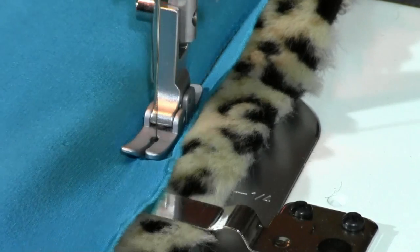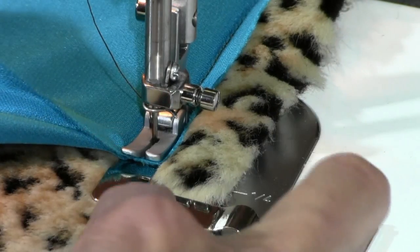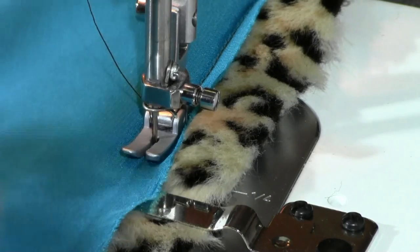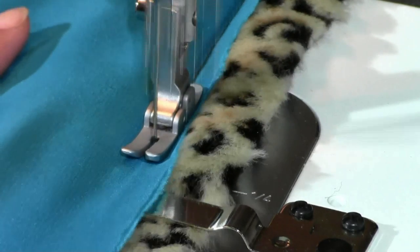See how easy that is? So you're just sliding both pieces of fabric. One is going through here, one is underneath, and you're stitching.